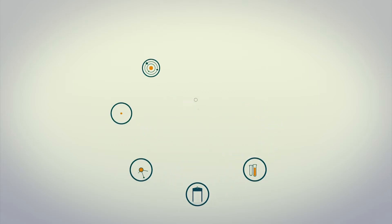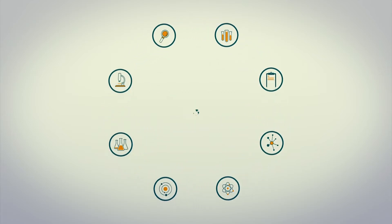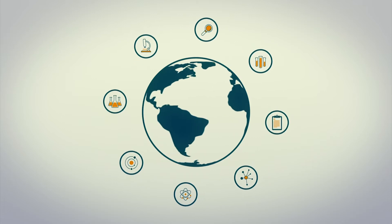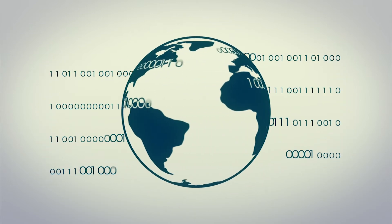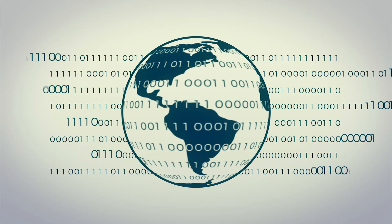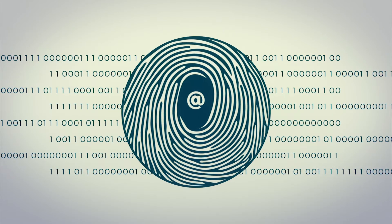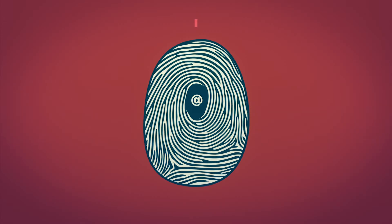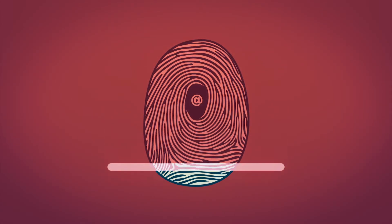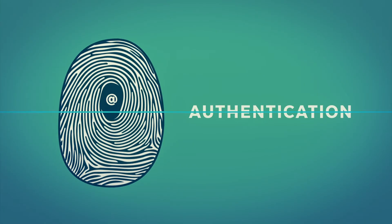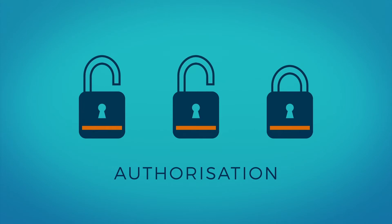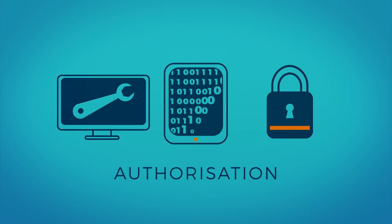Some of the most exciting research of today is done in international collaborations. Hundreds of researchers need to share data and software between institutions and across borders. To manage access to all these research resources, the collaborations need a way to digitally identify their researchers. Once they know who is who, they need to give the right researchers access to the right tools and the right data.